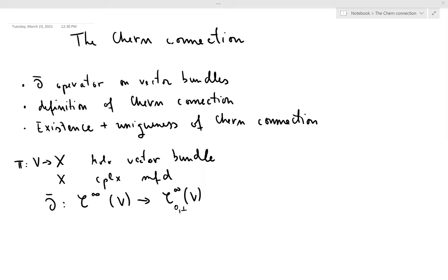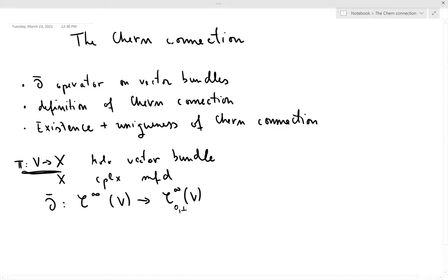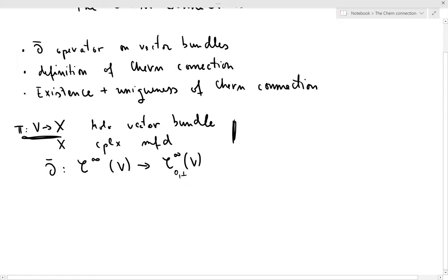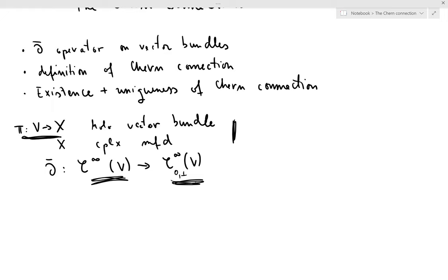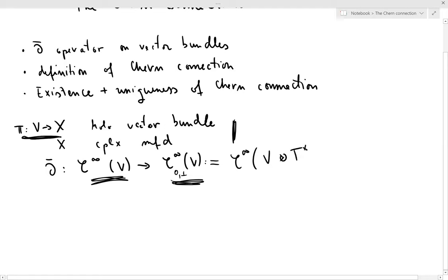To start off, let us take V, a holomorphic vector bundle with pi being the projection map and X a complex manifold. This will be the setting for the entire lecture. Del-bar is an operator that acts on the sheaf of smooth sections of V and takes you to the sheaf of smooth sections of V tensored with zero-one forms — that is, smooth sections of V with T-star zero-one of X.